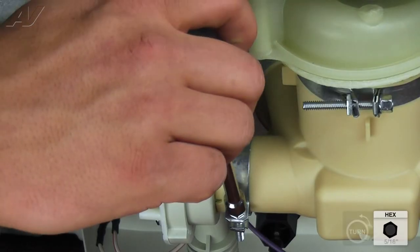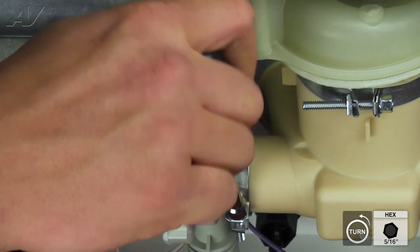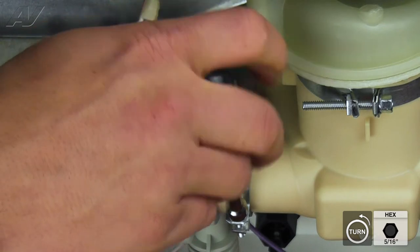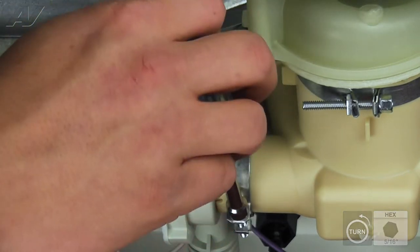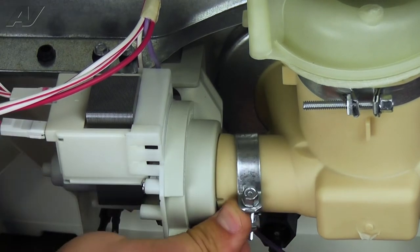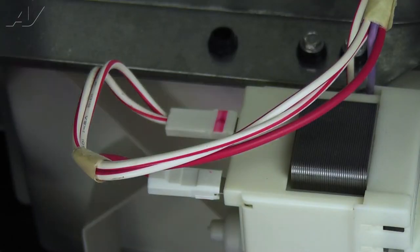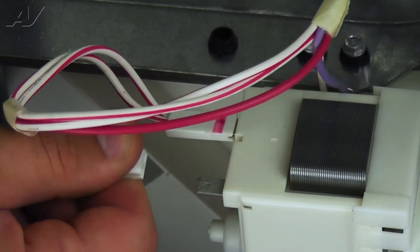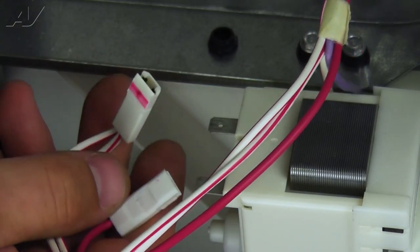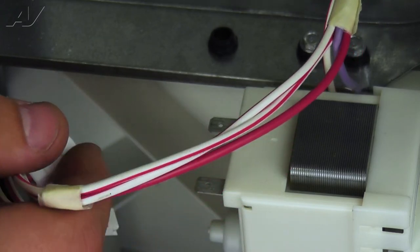Loosen the 5/16 inch screw on the clamp holding the pump to the sump and slide it as far back as you can. Remove the wiring connectors by pulling straight off. These wires just complete a circuit, so it is not necessary to take note of the orientation they are installed in.